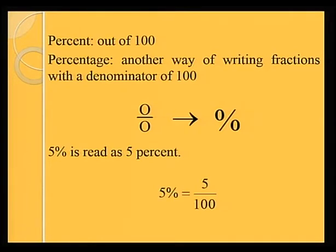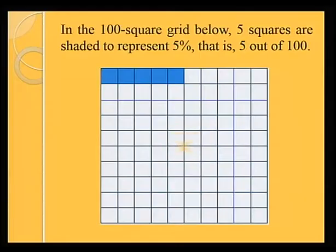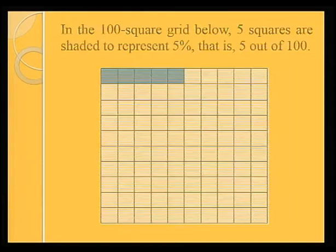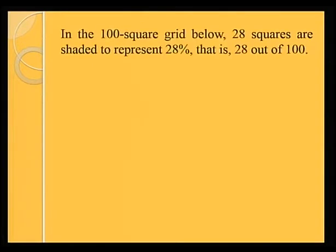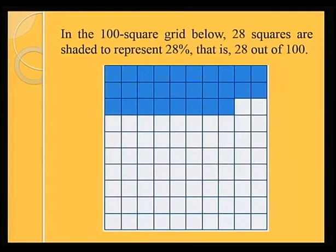5% is in fact equal to 5 over 100. At the primary level, you must have come across the 100-square grid. Here, 5 small squares are shaded and this represents 5%, that is, 5 out of 100. In the second case, 28 squares are shaded — that is, 28 out of 100 squares are shaded, which represents 28%.